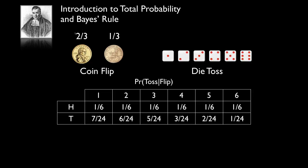So the underlying event we're interested in is which side of the coin shows. The observation probabilities are captured in a table — the probability of seeing a particular die toss given a particular coin flip. For example, the probability of seeing a three on the die is one-sixth if we conditioned on seeing heads, but if it's tails we use the different die, so the probability of seeing a three becomes five out of 24.